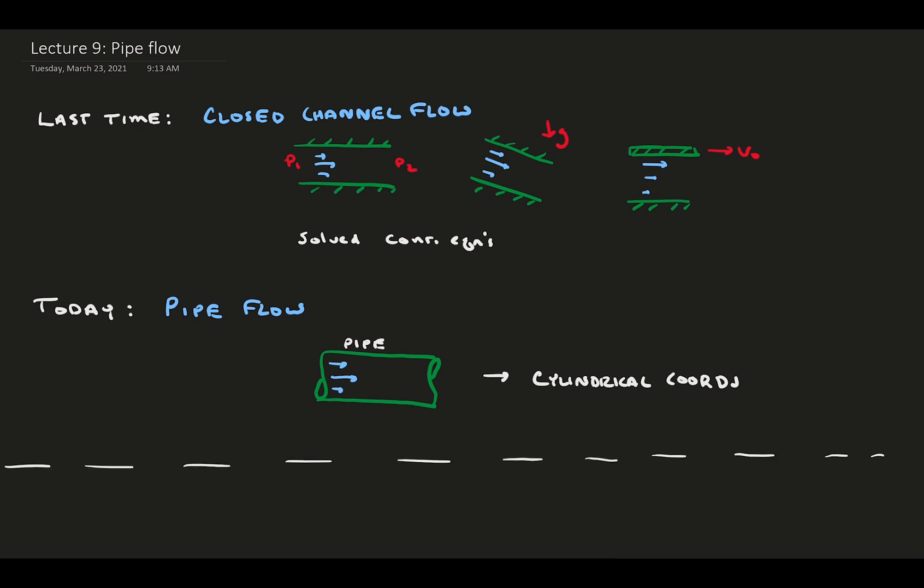Recall our procedure for solving the conservation equations, which we followed step by step for channel flow. First, we set up our flow by drawing a diagram and labeling all the boundaries, the flow, and coordinate system location. Second, we identified the boundary conditions. For channel flow, these were the no-slip and no-penetration conditions at the wall, meaning velocity in all three components was zero.